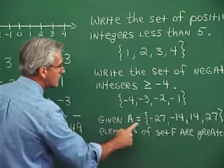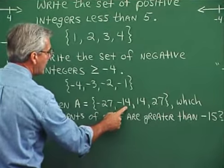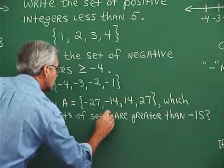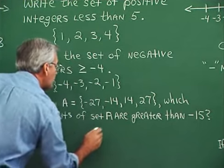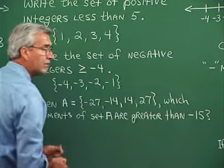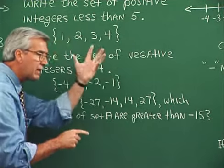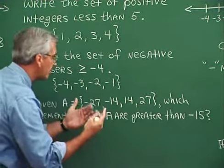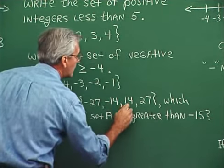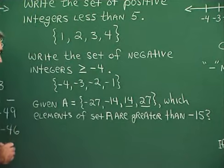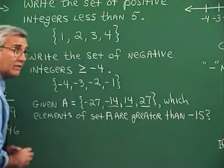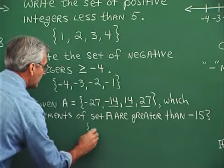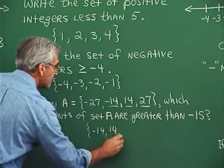We're given that A is the set containing negative 27, negative 14, 14, and 27. Which elements of set A are greater than negative 15? Greater than on the number line means to the right of. To the right of negative 15 — which of these numbers fall there? Certainly the positive numbers are greater than negative 15, but also negative 14 is greater than negative 15 because it lies to the right of negative 15. So this would be the set consisting of negative 14, 14, and 27.